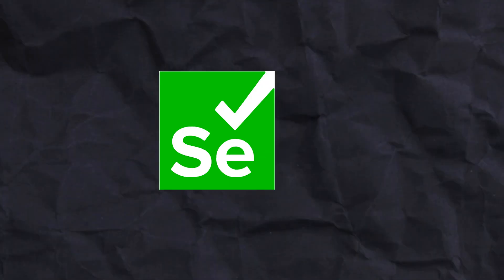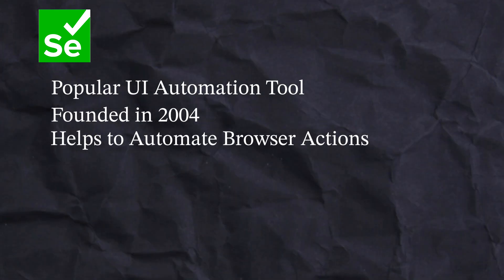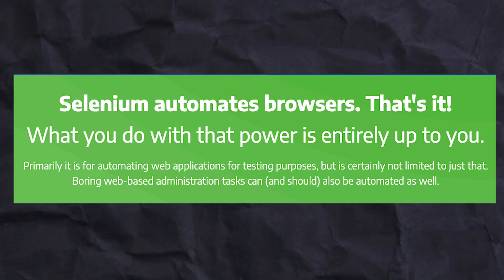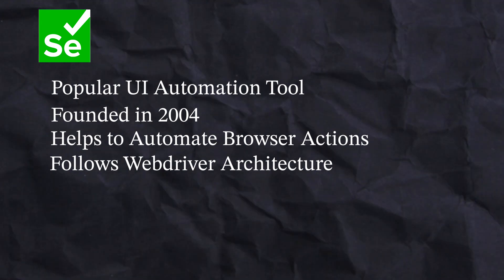Now let's talk about Selenium. Selenium is a very popular automation testing tool founded in 2004 — it recently celebrated its 20th birthday. Over those 20 years, Selenium has grown its community enormously. Selenium allows you to automate your browser using a WebDriver architecture that uses the JSON Wire Protocol to interact with browser elements, unlike Cypress which has native DOM access.